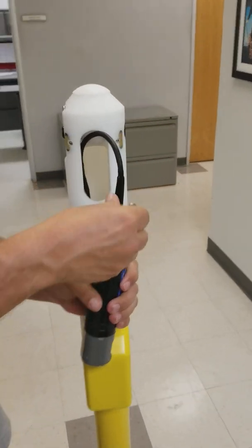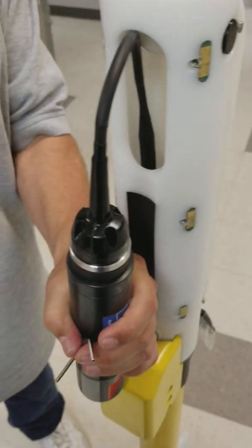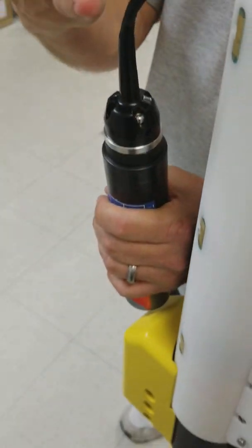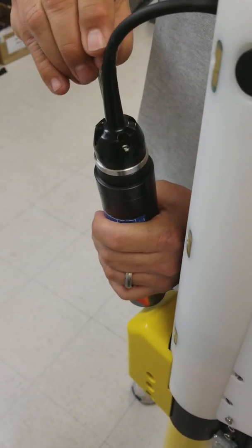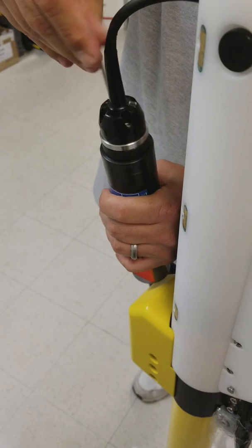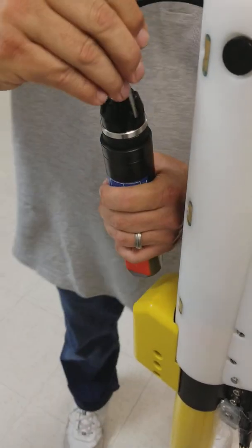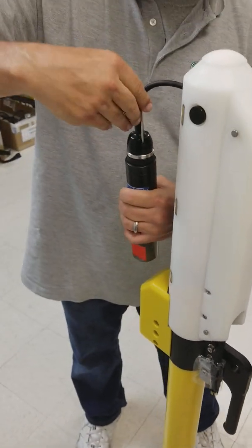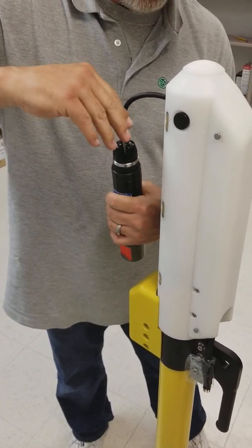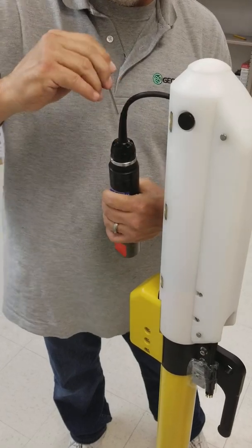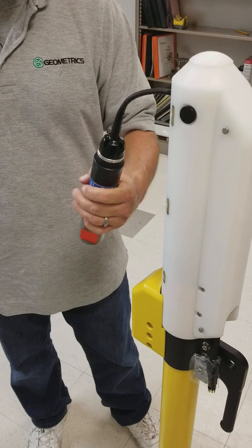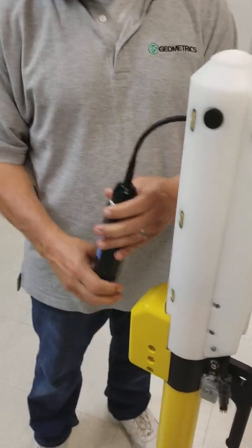Then you'll put your Allen screws. You'll have four. For the ease of demonstration, I only have two. Now you have your altimeter back on.